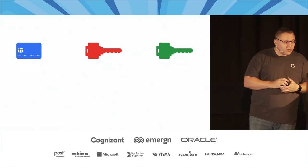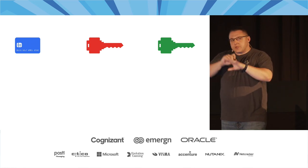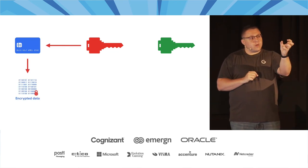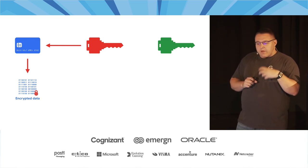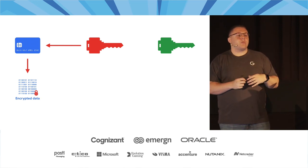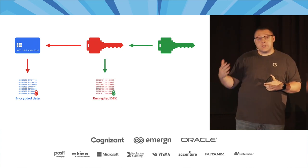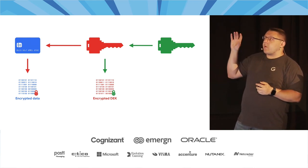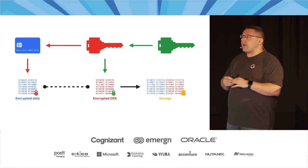We have our piece of secret data and we generate a data encryption key — the red key. We can use any system-level library like OpenSSL, or most languages support creating a key on the fly. We use that key to encrypt our piece of data — each time we get a secret, we generate a new key and encrypt with it. Then we have a key encryption key — the green key — which generally lives in some third-party system like a key management service. We use that key to encrypt the data encryption key. Now we have two pieces of encrypted data: the secret encrypted with the DEK, and the encrypted DEK itself encrypted with the KEK.